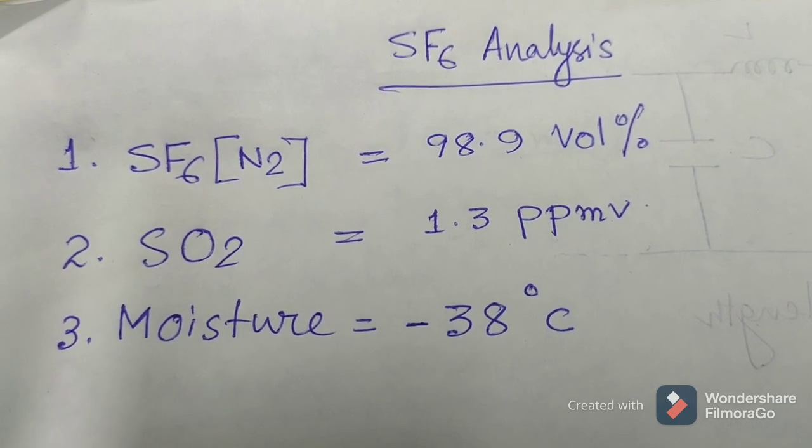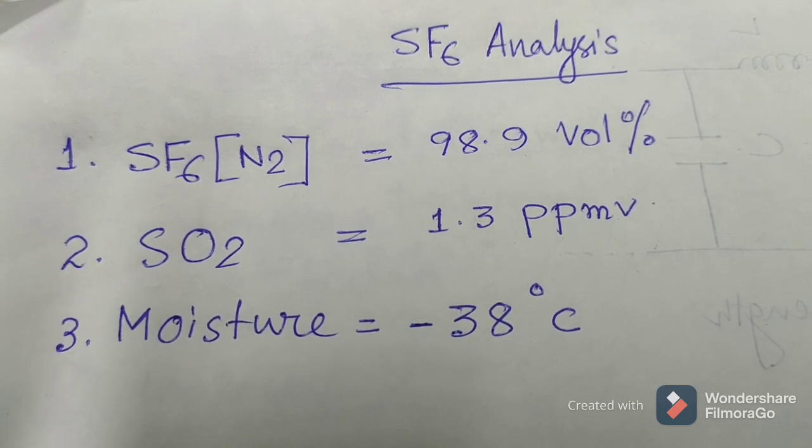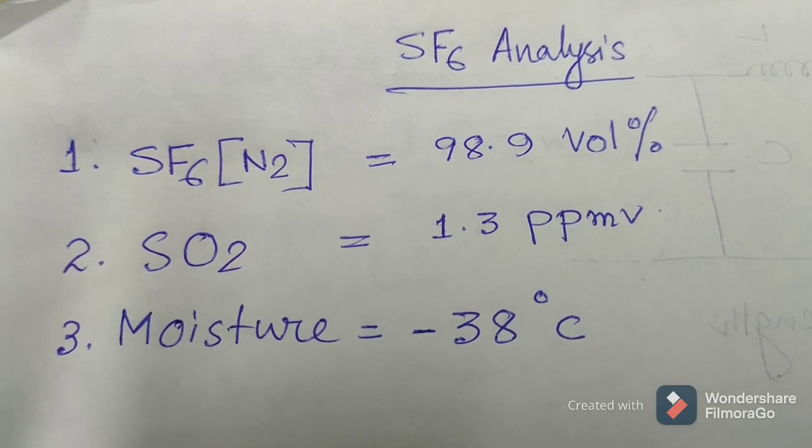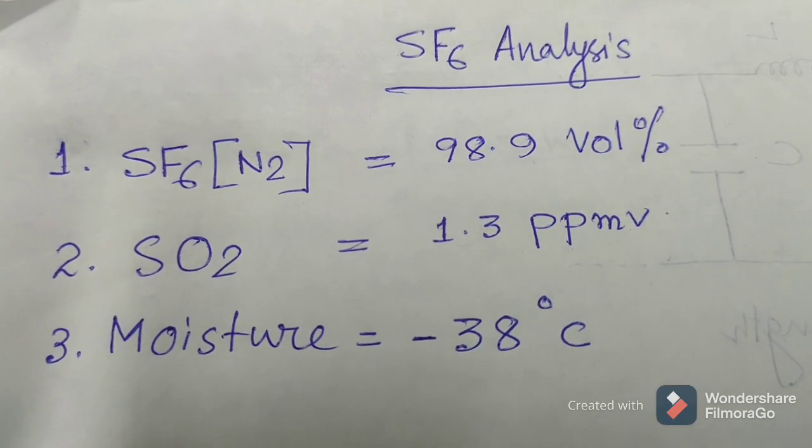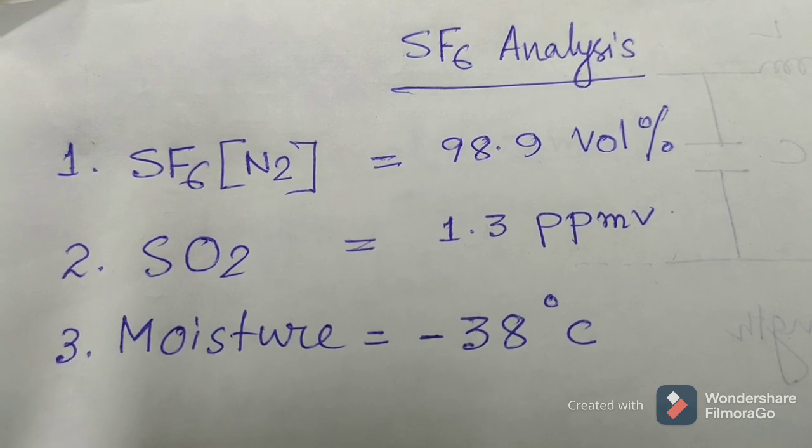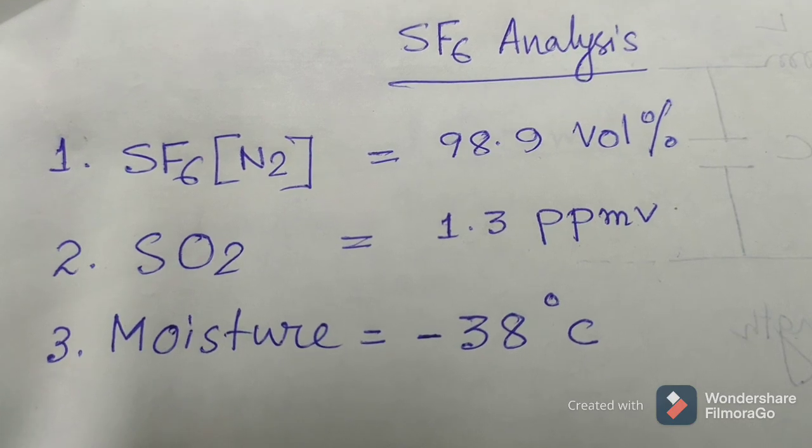First of all, we are analyzing our 33 kV SF6 CGL breaker, 132 kV AREVA or Siemens breaker, and also 220 kV AREVA breaker of separate pole, single pole mechanism type breaker.